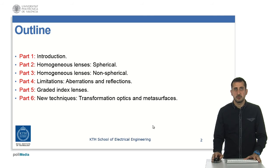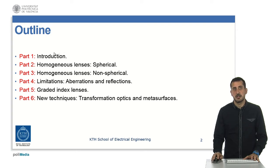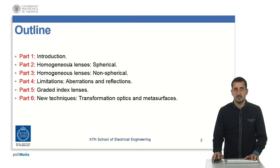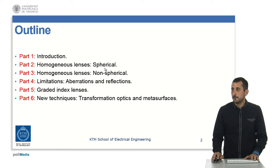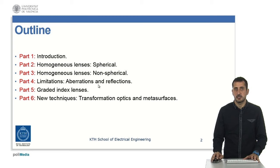This lecture is going to be divided into different parts, and each part will be a different video. In the first part, the introduction, I will tell you what a lens antenna is and why they are important to study. After that, we will go to one type of lenses: homogenous lenses. We will start with spherical shapes and then deal with non-spherical shapes. After these homogenous lenses, I will tell you the main limitations — aberrations and reflections.